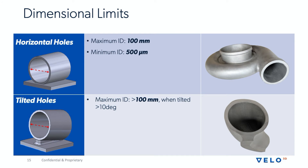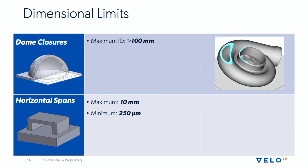Regarding horizontal holes, Velo3D can print an unsupported span of a 100 millimeter diameter on a horizontal hole, and can resolve a minimum of 500 micron horizontal hole. When you tilt those holes, the maximum diameter greatly increases to well beyond 100 millimeters, especially when the degree of tilt is 10 degrees or more. Dome closures are another feature that we can print well beyond a 100 millimeter diameter completely free of support. Horizontal spans up to 10 millimeters unsupported, and the minimum width between those two spans that we can resolve is 250 microns.